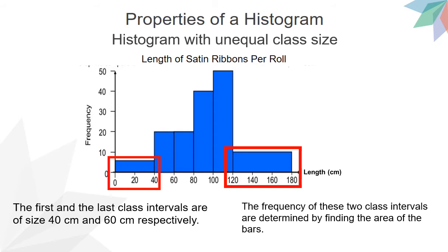For the last bar, the height of the bar multiplied by the width of the bar which is 3 units. As a conclusion, the frequency of the histograms are based on areas of the bars, not the height of the bars.